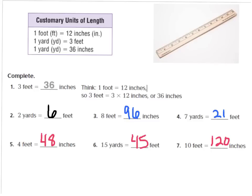Number 5 says 4 feet equals how many inches — you should have 48 inches. We have 4 feet, and 1 foot equals 12 inches. So 4 times 12 gives you 48 inches.